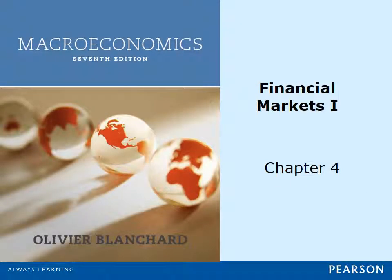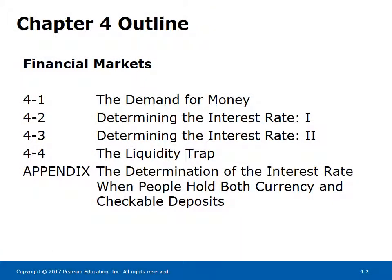Chapter 4 – Financial Markets. Outline: 4-1 The Demand for Money, 4-2 Determining the Interest Rate 1, 4-3 Determining the Interest Rate 2, 4-4 The Liquidity Trap, and 4-5 The Determination of the Interest Rate When People Hold Both Currency and Checkable Deposits.